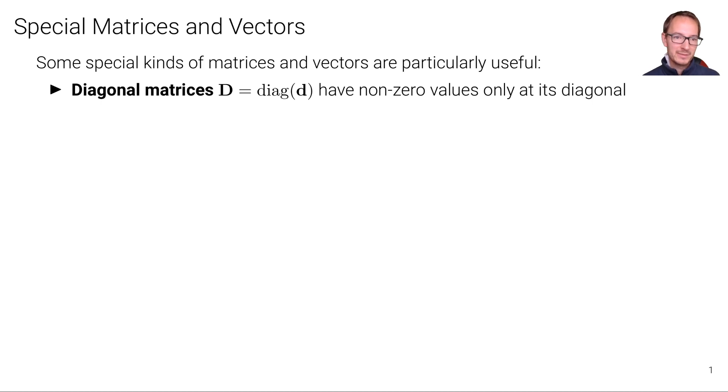First we have diagonal matrices, here in this case the matrix D. Diagonal matrices are matrices that have non-zero values only at their diagonal. So we can also write them in this notation here, diag of vector d, where then the elements of the vector d are placed at the diagonal of the matrix D, but everywhere else we put zeros.